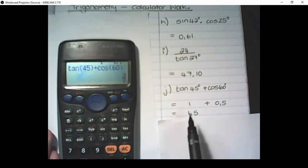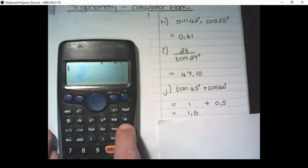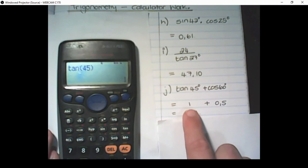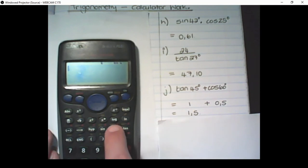You can also work them out separately. Tan of 45 is equal to 1. Then I say cos of 60 is equal to a half. And then 1 plus a half is 1.5.